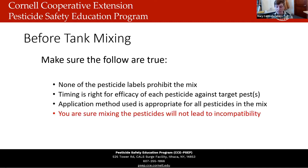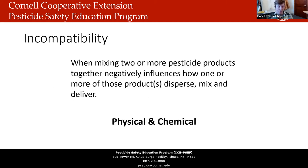That's what we're going to focus on today — the incompatibility piece. Incompatibility occurs when you're mixing two or more pesticide products together and that negatively influences how the other pesticide products in the tank disperse, mix, and deliver. Basically, incompatibility is where one or more of your pesticide products are no longer effective for pest control because you mixed them with another product.